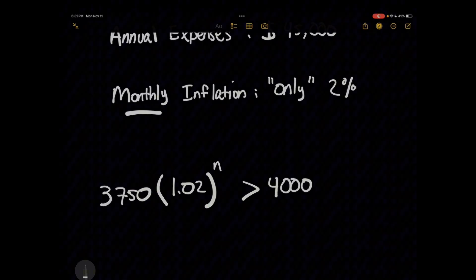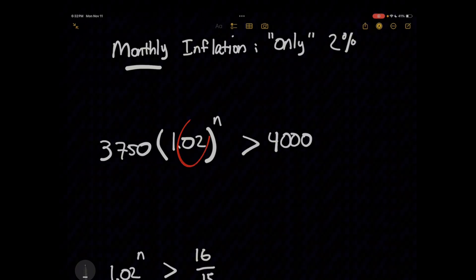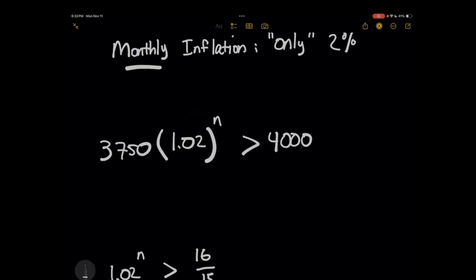Now, in case you don't remember, this 1.02, all I'm doing is think about the cost of living every month going up by 102% times what it was last month, right? Well, as a decimal, 2% is 0.02, and we're just adding it to a whole number of 1. And now we need to solve this expression.